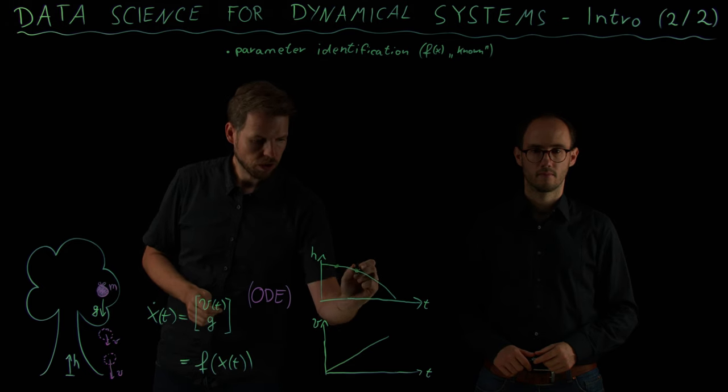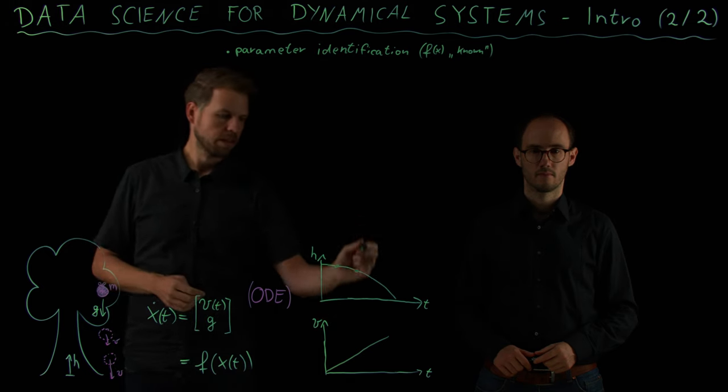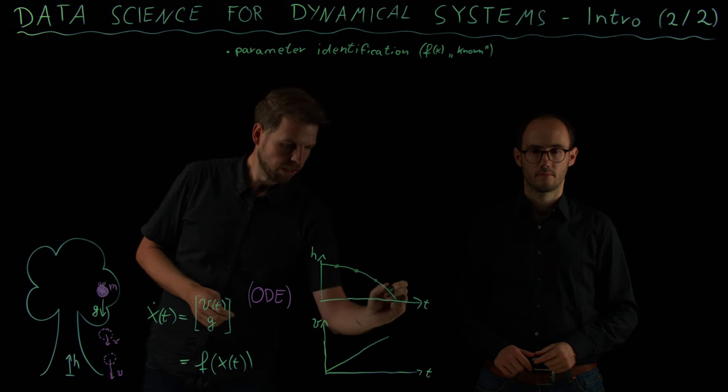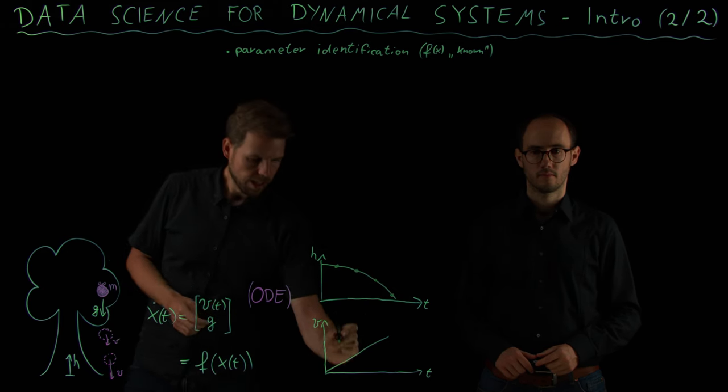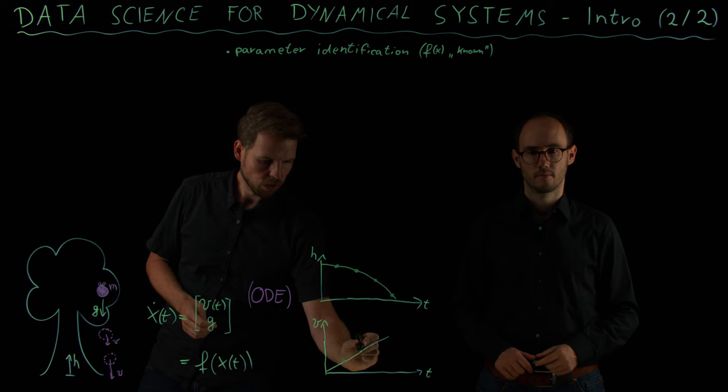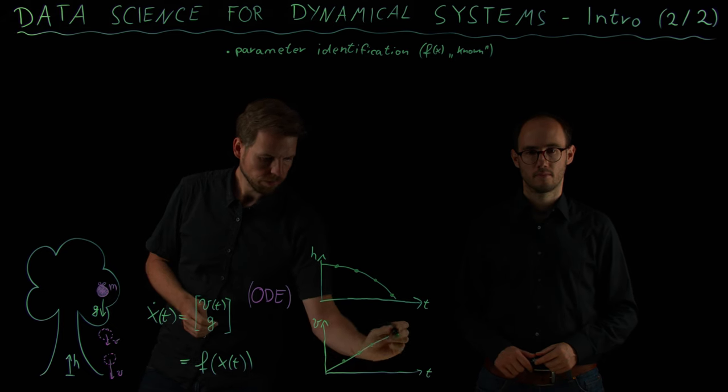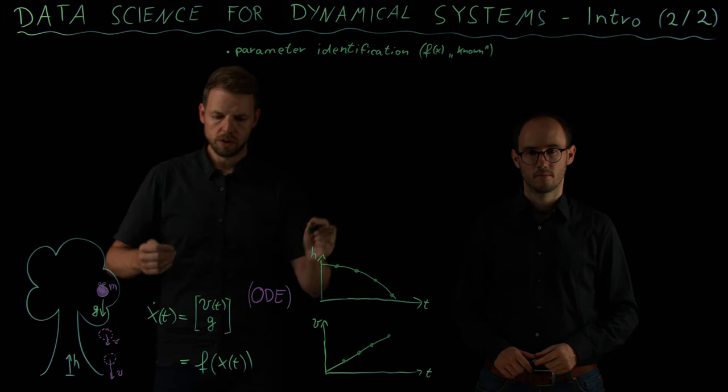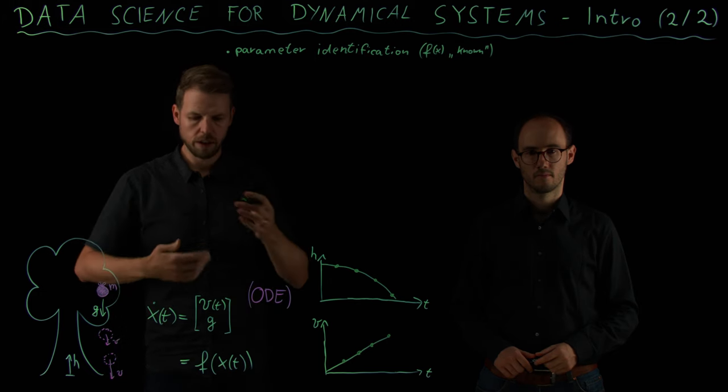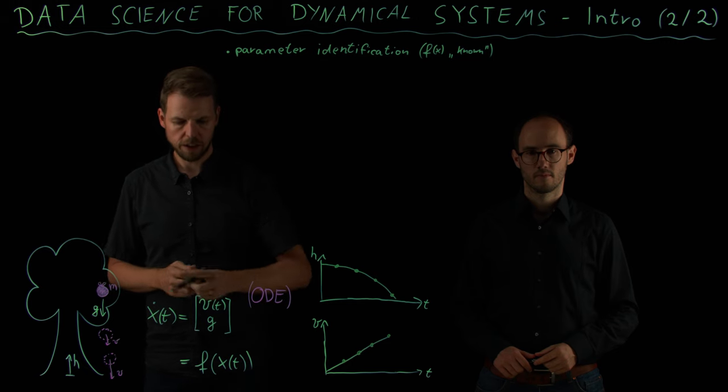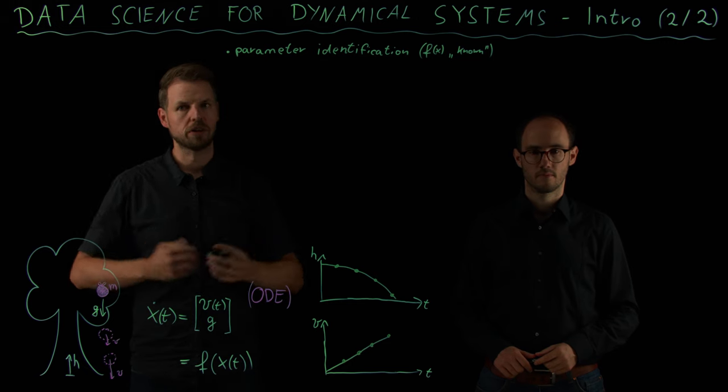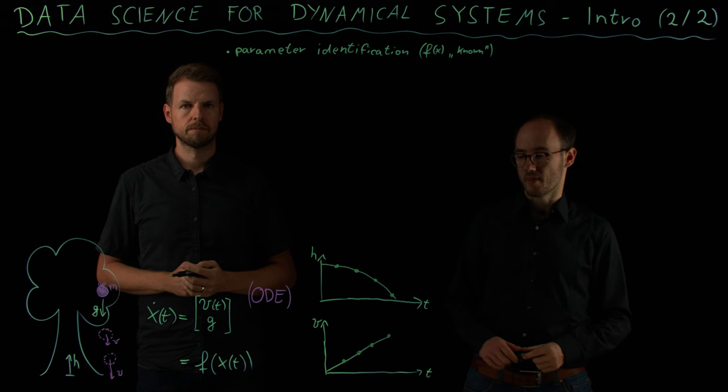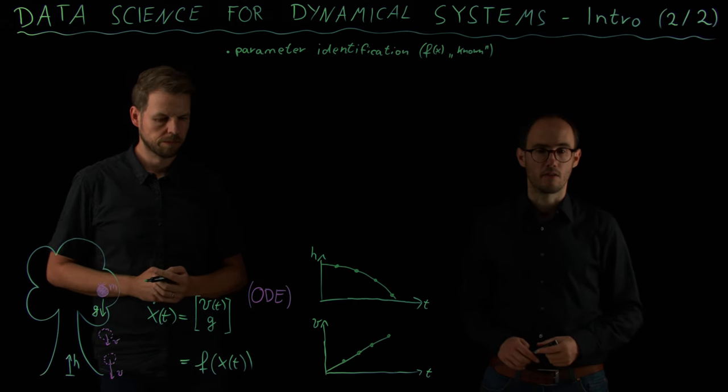What we can do now is we take measurements of the velocity. We do not know the continuous trajectory, but at some discrete points in time we know the height and maybe in this first setting we also know the velocity. We have measurements over time and we can now use these to learn using machine learning or other data driven techniques to identify these parameter values.